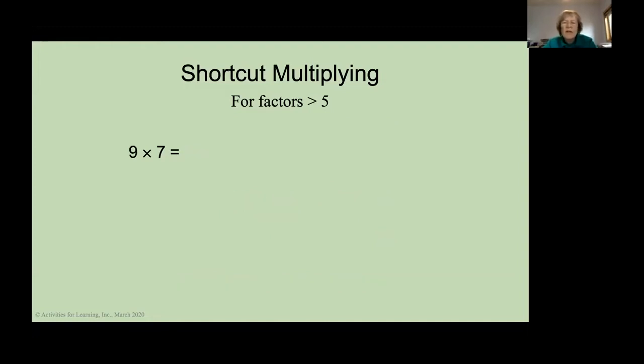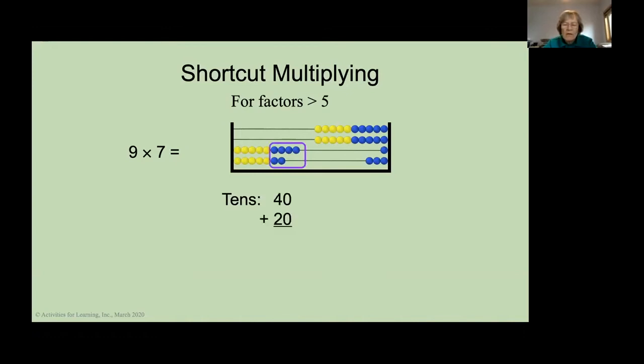Let's do another one. 9 times 7. I am putting 9 on the second wire from the bottom, 7 on the bottom wire. The number of tens is 40 and 20, which is 60. And the number of ones is 1 times 3 is 3. So, the total, 9 times 7 is 63. Now, the beauty of this is you can actually do this in your head. You can see these numbers in your head.